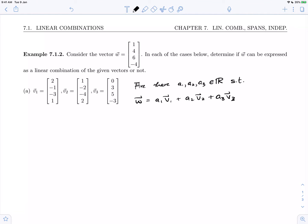This is called a vector equation, and this vector equation has unknowns. We know what the vectors are. The unknowns are the coefficients: a1, a2, and a3.